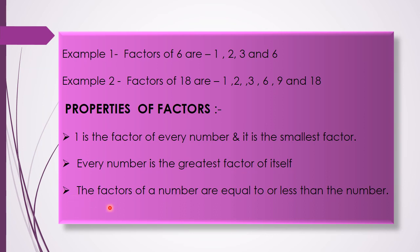The third property is that the factors of a number are equal to or less than the number. The factors of 6 are equal to 6 at most — the greatest factor is 6 and all others are less. Similarly for 18, all factors are less than or equal to 18. So the factors of any number lie between 1, the smallest factor, and the number itself, the greatest factor.